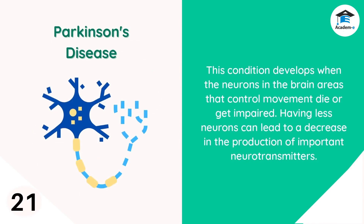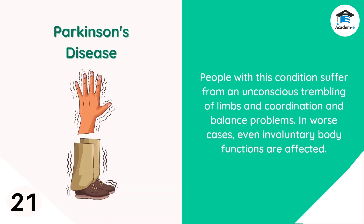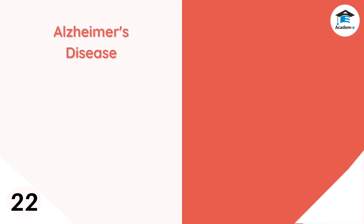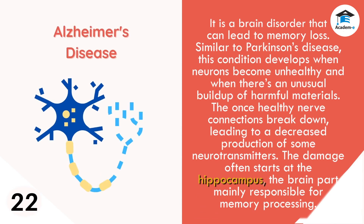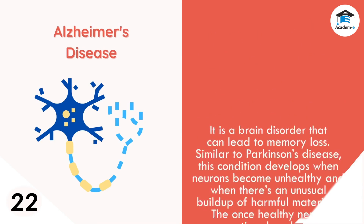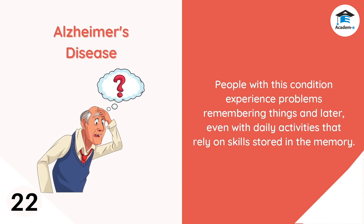Parkinson's disease develops when the neurons in the brain areas that control movement die or get impaired. Having fewer neurons leads to a decrease in the production of important neurotransmitters. People with this condition suffer from unconscious trembling of limbs and coordination and balance problems; in worse cases, even involuntary body functions are affected. Alzheimer's disease is a brain disorder that can lead to memory loss. It develops when neurons become unhealthy and there is an unusual buildup of harmful materials, causing nerve connections to break down and decreased production of neurotransmitters. The damage often starts at the hippocampus — the brain part mainly responsible for memory processing.